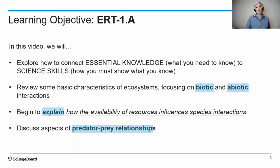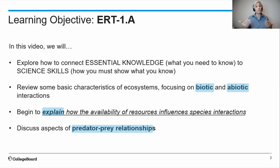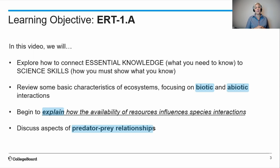We're going to focus on Learning Objective ERT 1A. In this video, we're going to explore how to connect the essential knowledge — what you need to know in this course, the nuts and bolts — to the science skills, which is how you have to show what you know on the actual AP exam. We're going to review basic characteristics of ecosystems, focusing on biotic and abiotic interactions, explain how the availability of resources influences species interactions, and discuss some aspects of predator-prey relationships.